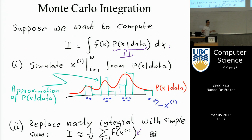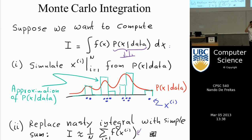The Monte Carlo method says: if you have to solve an integral, draw samples from a distribution, and replace the integral by a sum over the number of samples. If your number of samples is about 1,000 or 10,000, that sum can be done very quickly in a computer. The only thing that remains is figuring out how to draw samples from an arbitrary distribution.